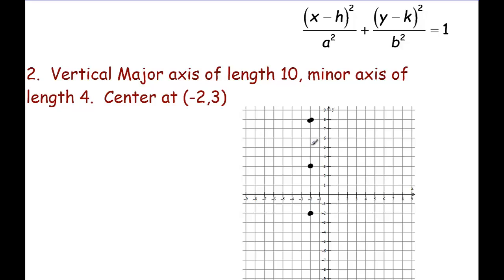Notice it said vertical, that's why I went vertical, and then minor axis of course has to be horizontal in this case of length 4. So that means we count half of that amount right and left to the outer edges of this ellipse, and of course the ellipse would follow that basic pattern.